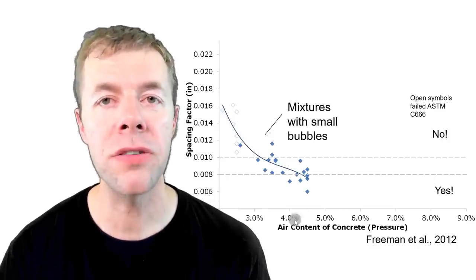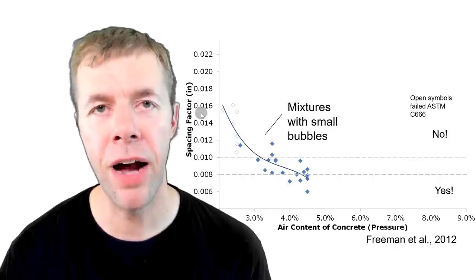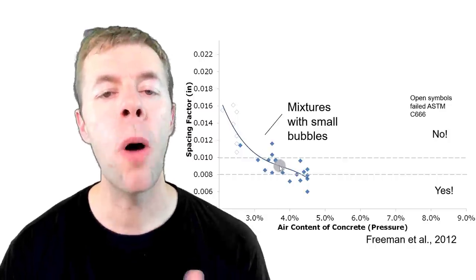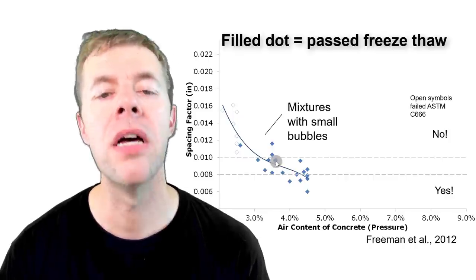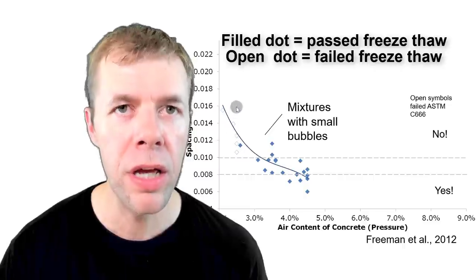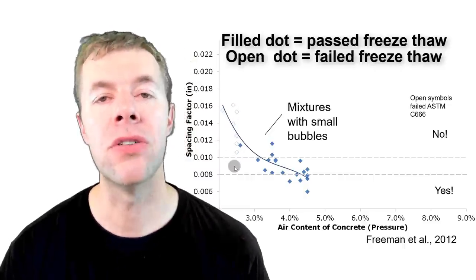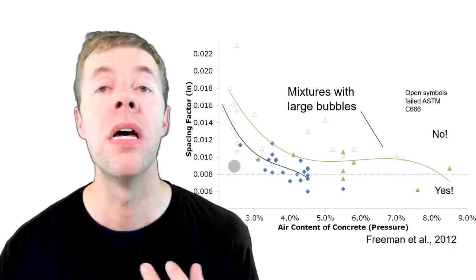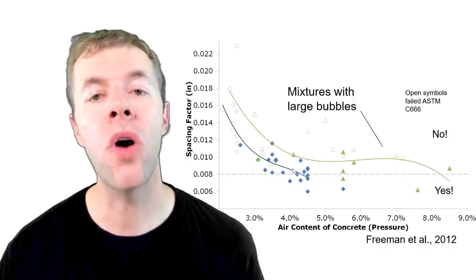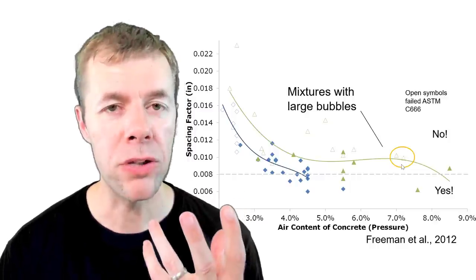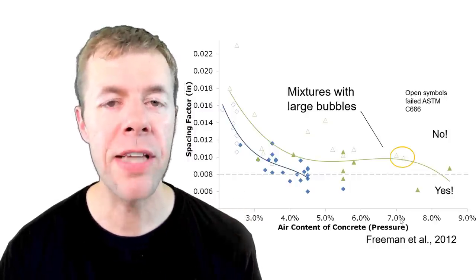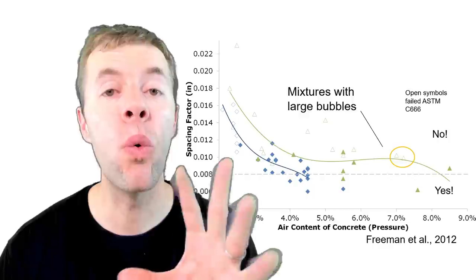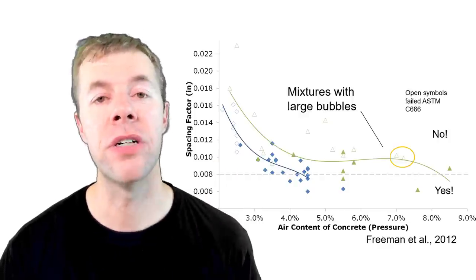Here's more data. Here's air content on the x-axis. Here is spacing factor, that magical number here, and there's that .008 inches. Everything that's a blue dot here, these are all mixtures with small bubbles. Everything that's a filled dot, that means it passed the freeze thaw test. These open dots, that means they failed the freeze thaw test. All those are small bubbles. Now, if we look at mixtures with larger bubbles, which happen all the time, look, there's an offset, a clear offset. And look at these two bubbles here. Look at these two data points right here. They're open. They have seven percent air. These two data points would pass every specification in the world when it comes to freeze thaw durability. And they're failing the freeze thaw test.